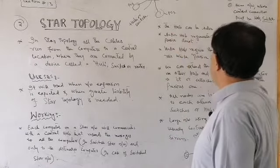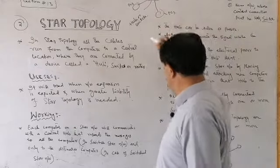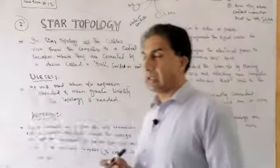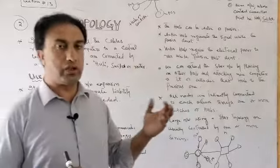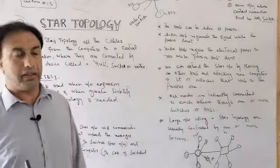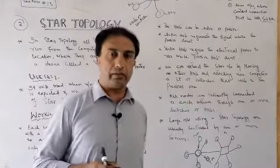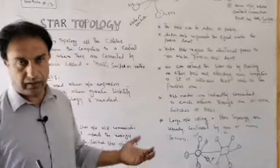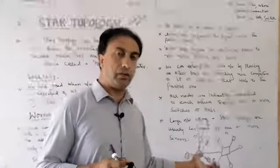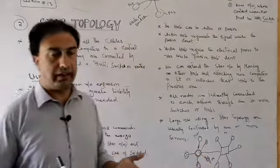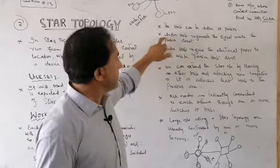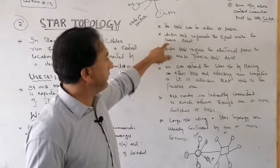The hub can be active or passive. Active hubs regenerate or amplify the signal, while passive hubs do not. Active hubs require electrical power to run, while passive hubs do not require electrical power.